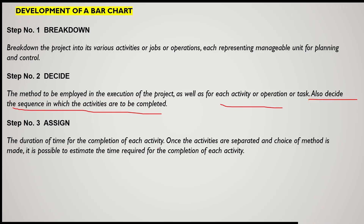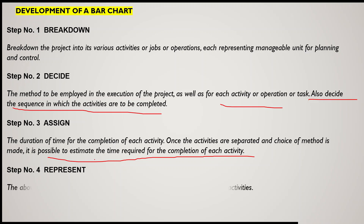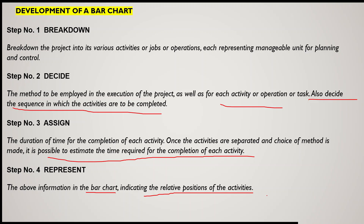Step three: assign the duration of time for the completion of each activity. Based on your experience and available information, decide the duration for each activity. Once activities are separated and the method is chosen, it is possible to estimate the time required for each. Step four: present all the information — activity names, durations, and relative positions — in a bar chart.